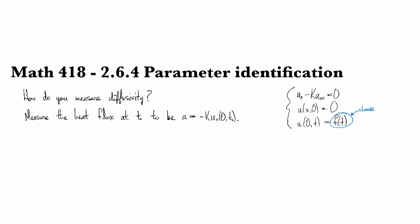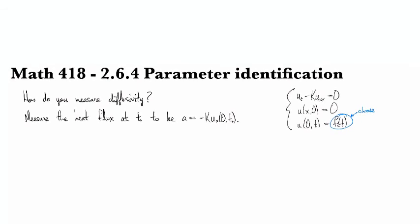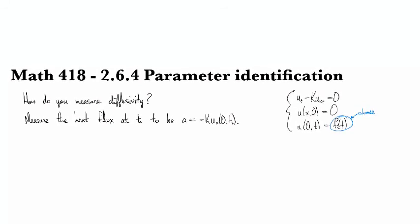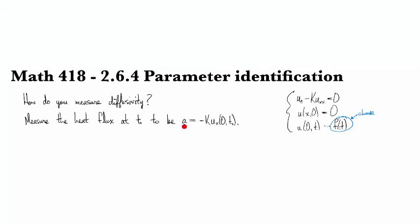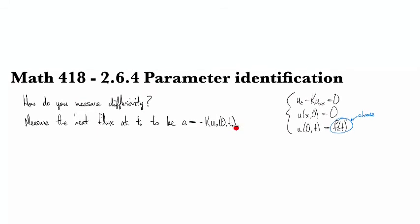So the idea is we're going to heat up the end of the bar according to some f. And then we're going to measure the heat flux at some particular time. And we'll take the measurement to be a. So a is going to be, and then here's our measurement, our expression for the heat flux.